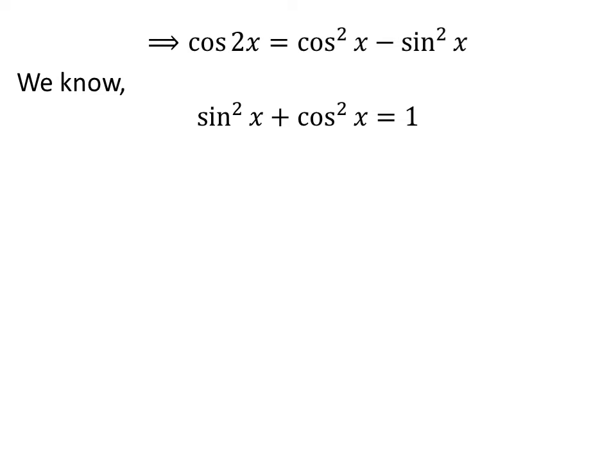We know the famous trigonometry identity square of sine of x plus square of cosine of x is equal to 1, so square of cosine of x is equal to 1 minus square of sine of x.